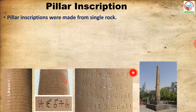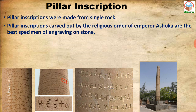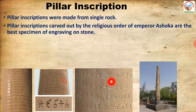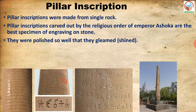The pillar inscriptions were made from a single rock — a large stone was carved to create the pillar. Pillar inscriptions carved by the religious order of emperors — Ashoka's pillars are the best specimens of engraving. They were polished so well that they gleamed and shined. Such pillars were erected in Ambala, Mirat, Allahabad, Sarnath, Lorya, near Nandangarh, Sanchi, Kashi, Patna and near Bodh Gaya.